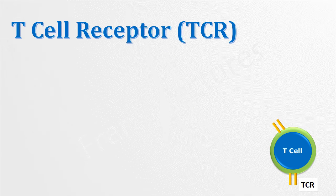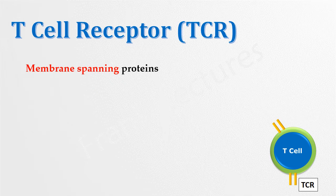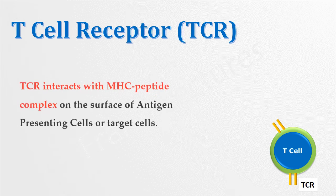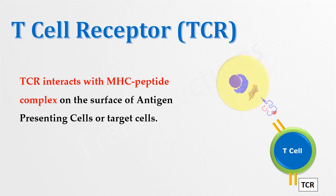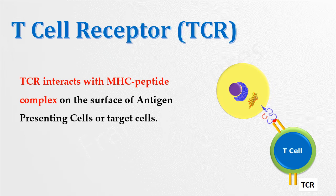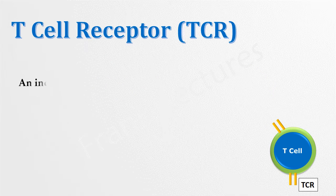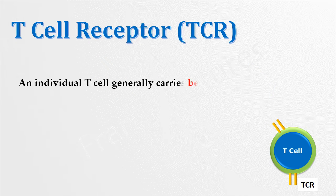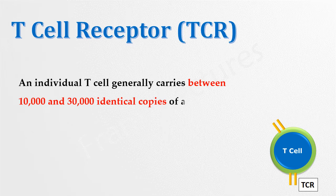T-cell receptors, abbreviated as TCRs, are molecules on the surface of T-cells. These are membrane-spanning proteins that interact with antigens presented by MHC molecules on the surface of antigen-presenting cells or target cells. Each T-cell carries between 10,000 and 30,000 identical copies of a single T-cell receptor on its surface.